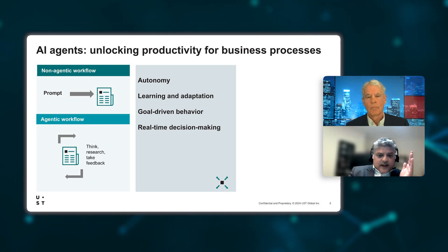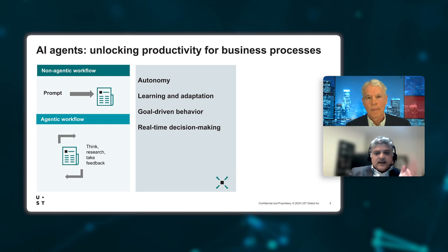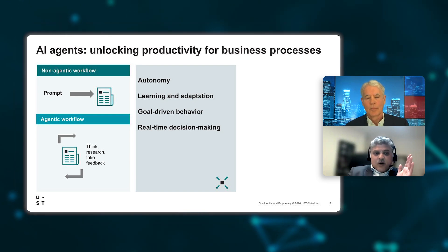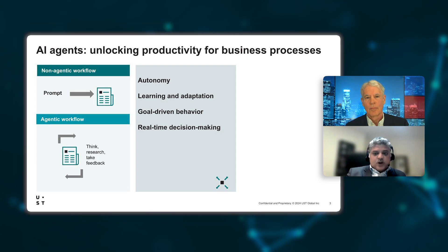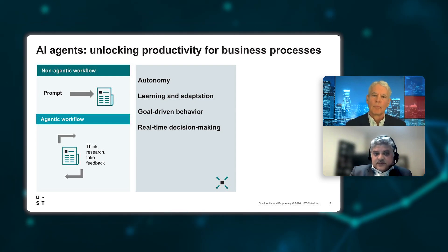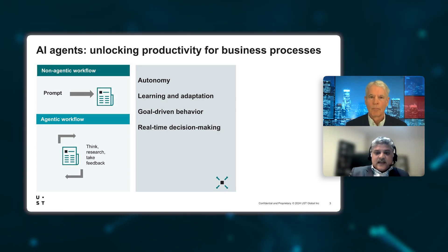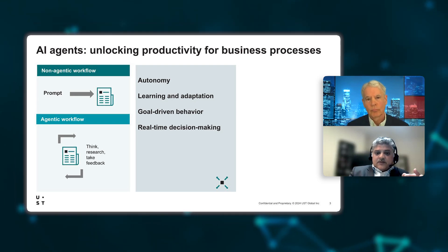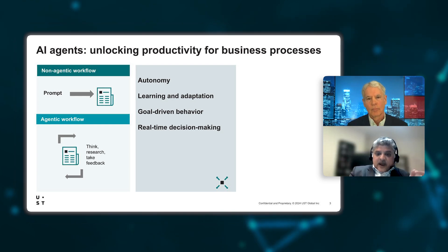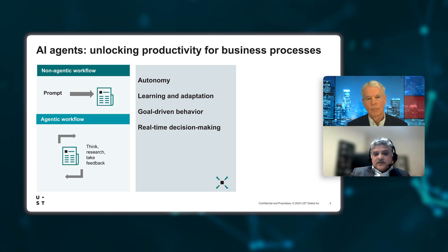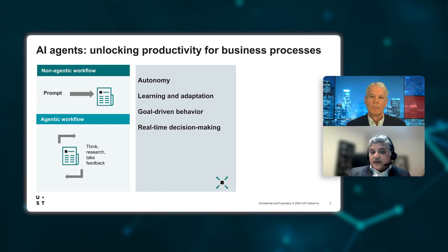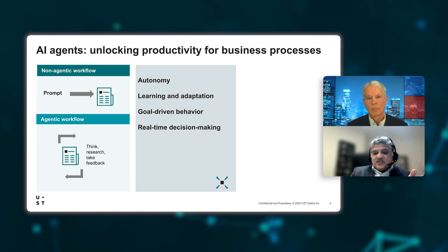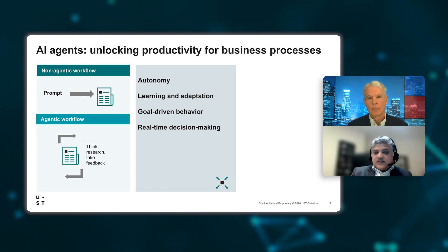The characteristics of agentic AI — autonomy, learning and adapting, goal-driven behavior, and real-time decision-making — all lead to tangible business values. Most commonly these values are seen in increased efficiencies, reduced costs, and increased accuracy. In a healthcare world, for example, RAG can assist doctors by retrieving the latest research and medical information, helping them make better-informed decisions. Other real-world examples include question answering systems, enhanced search engines, document processing, and summarization.